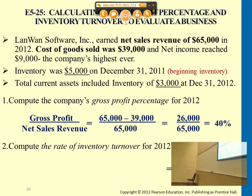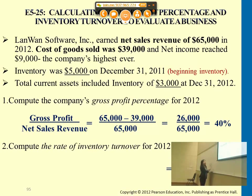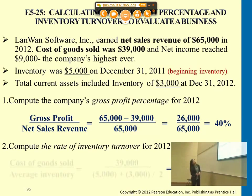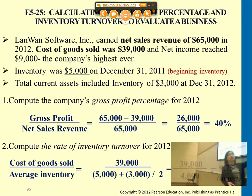For rate of inventory turnover, we want to understand how quickly inventory is going to be sold to the customer — how many times cost of goods sold exceeds average inventory level. Cost of goods sold is $39,000. Average inventory uses beginning inventory plus ending inventory divided by 2: $5,000 plus $3,000 divided by 2 equals $4,000.